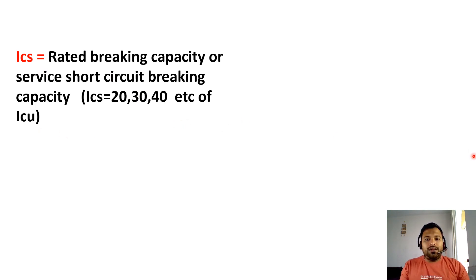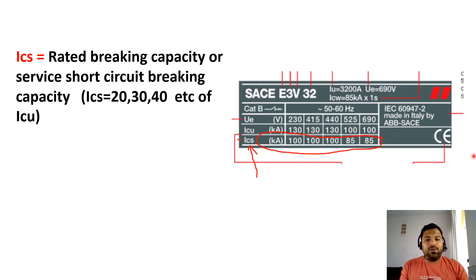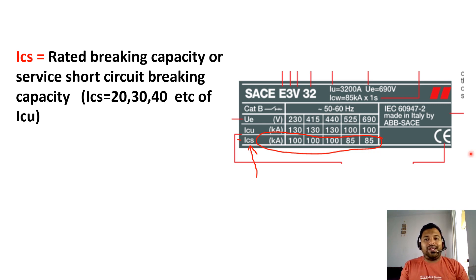If we look at where we can see these values — this is the ICS value. This means this breaker can interrupt fault currents of 85 kiloamperes, and in this case the circuit breaker will not get damaged. ICS value means the circuit breaker will not get damaged — it can withstand a maximum of 85 kiloamperes. This is what is written as the ICS value.